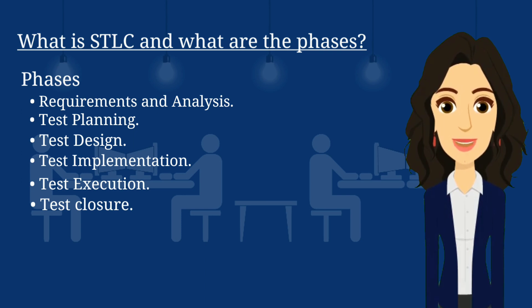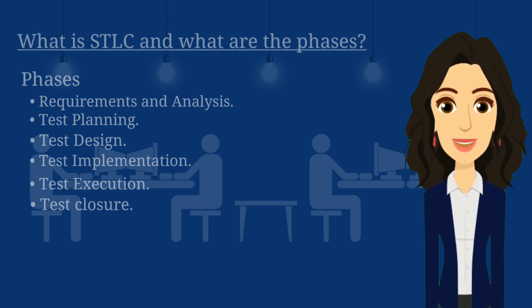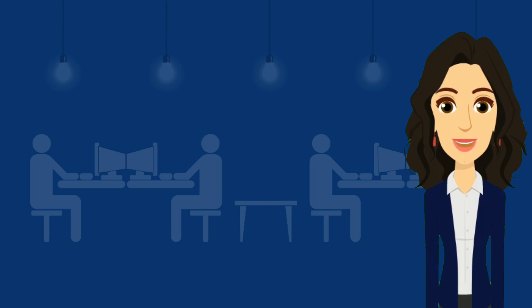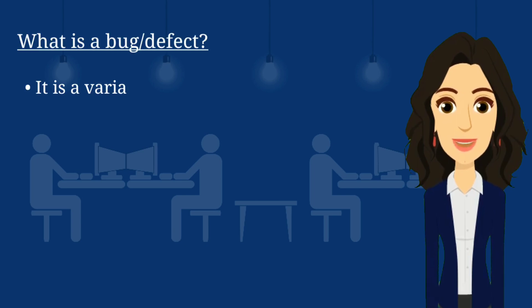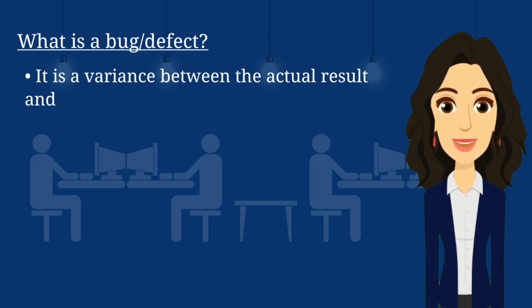The next question is: what is a bug or defect? A bug or defect is a variance between the actual result and the expected result.